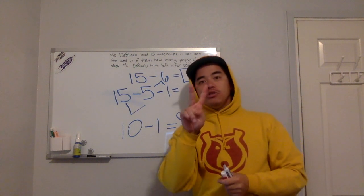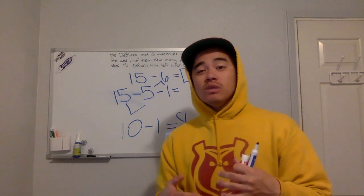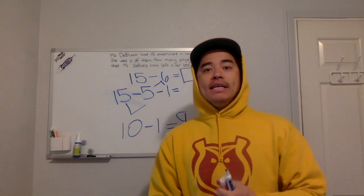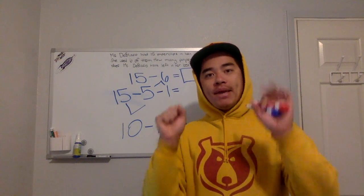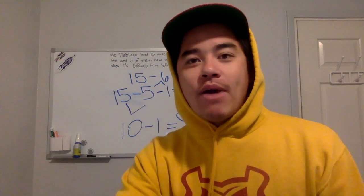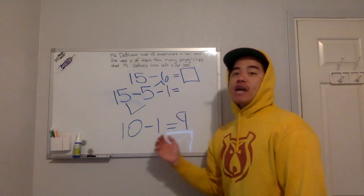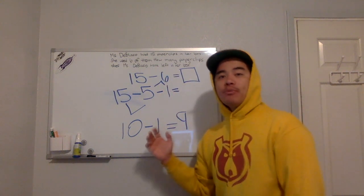So Rocketeers, there are two strategies that we can use to solve today's number story. It is by counting down and by making 10s. Make sure if you didn't do any of these strategies, you copy it down on your paper. All right. I'll see you soon.